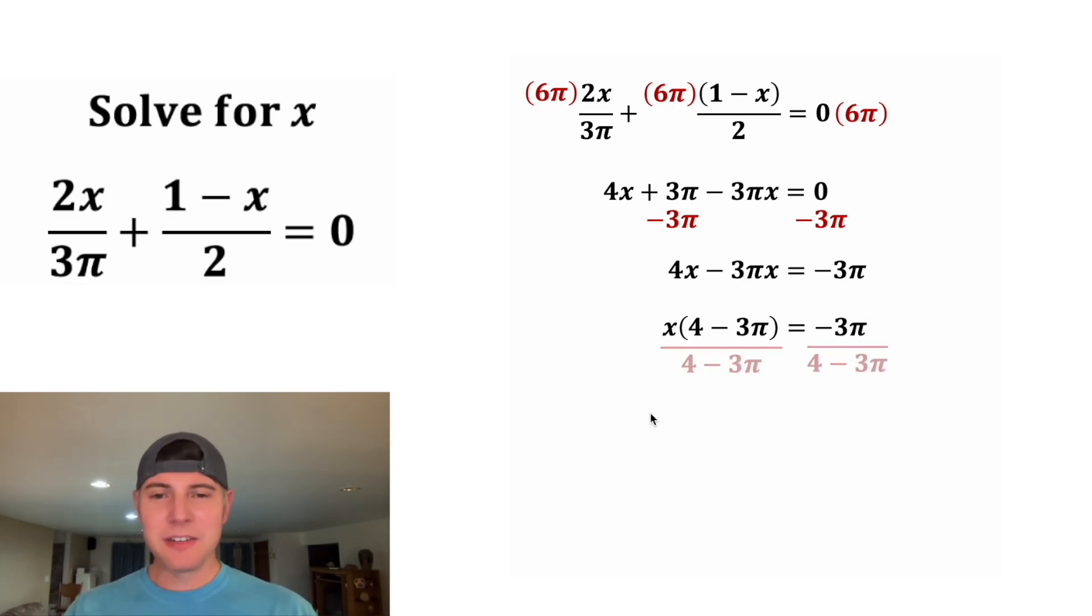Now to get x by itself, we can divide both sides by 4 minus 3π. And let's copy this step down and simplify it. On the left-hand side, the 4 minus 3π on top and bottom will divide each other out. We're left with x is equal to negative 3π over 4 minus 3π.